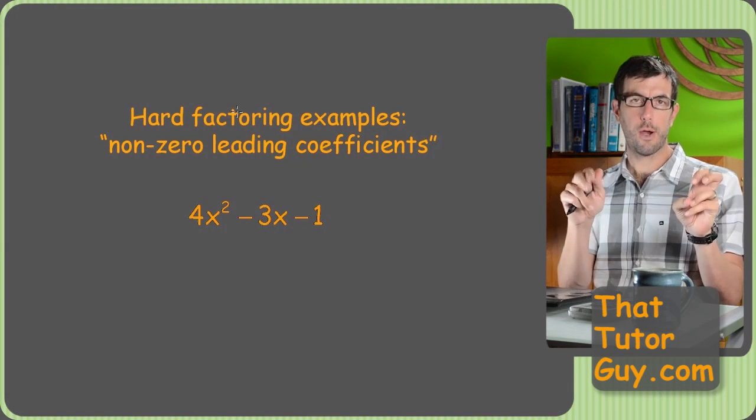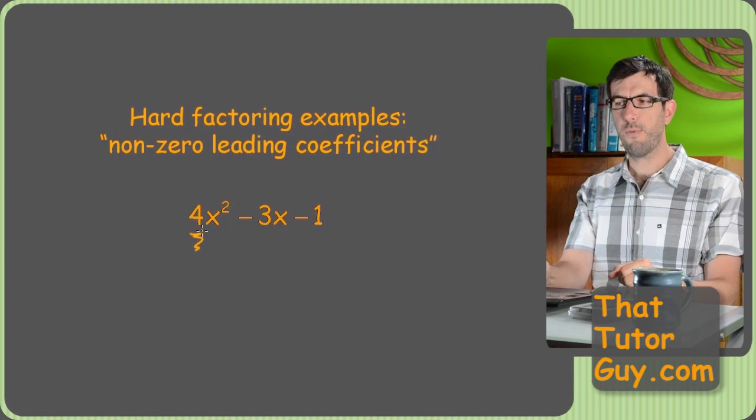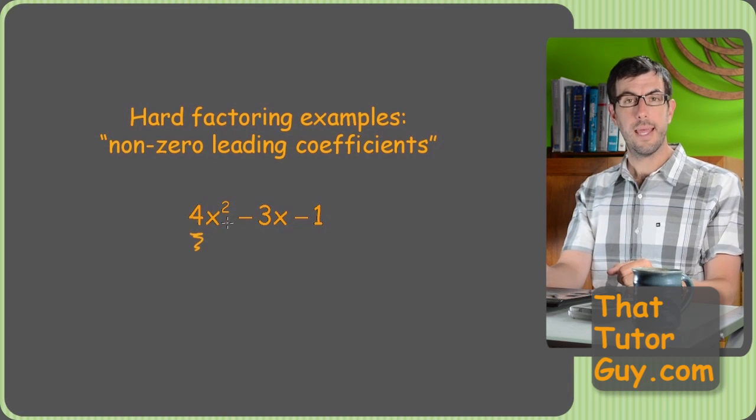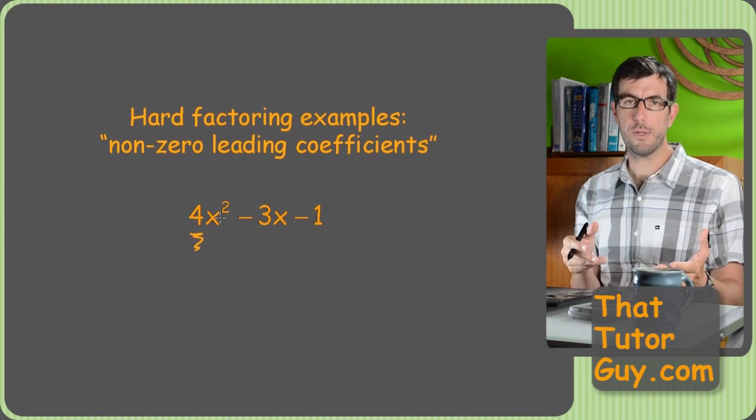All right, welcome back for what we're going to call hard factoring examples. Now these are the ones where we have the number, in this case 4, in front of the x squared, and that's what just makes things trickier because it kind of messes up the math on coming up with that middle term.